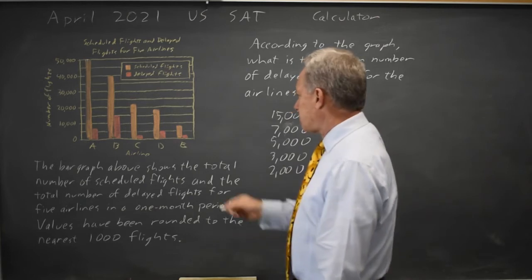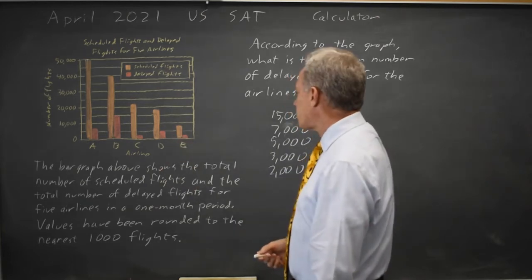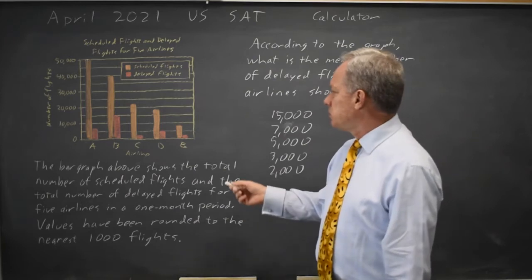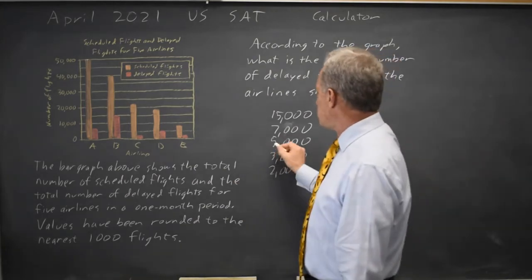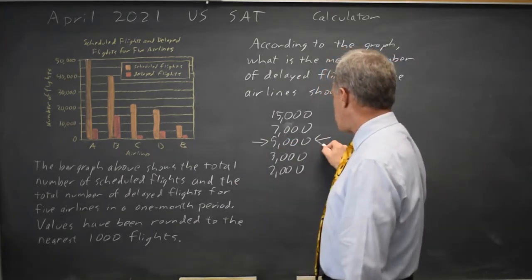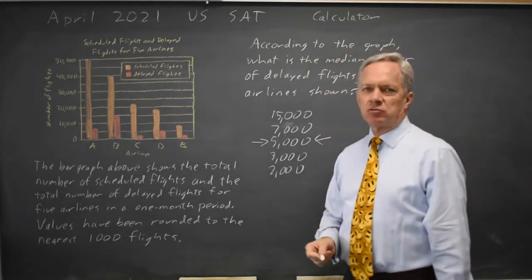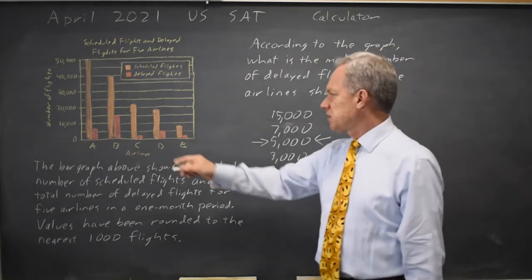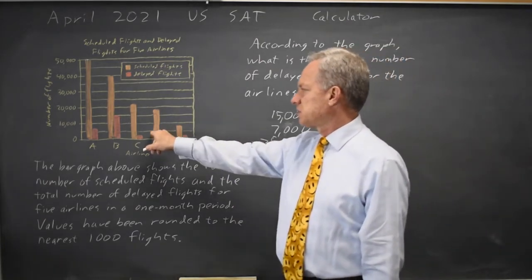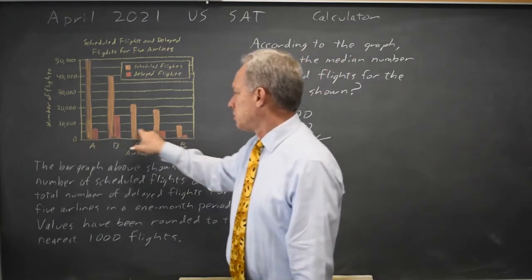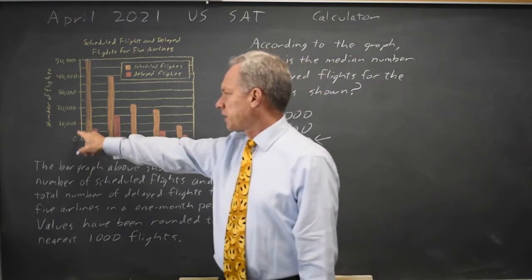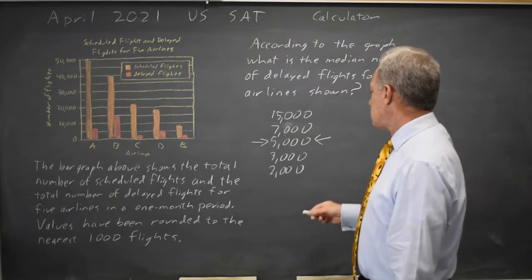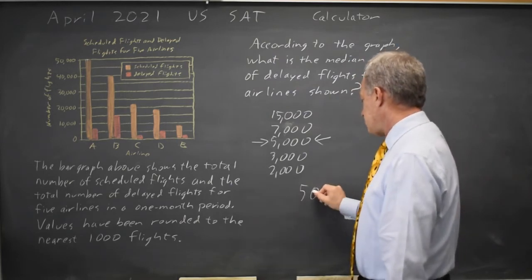Those might actually both be 2,000 or both 3,000. But in any case, we do know the median is the middle number when they're written from smallest to largest, and that's 5,000 — a value we can read accurately because it's even with the horizontal line halfway between 0 and 10,000. So our answer would be 5,000.